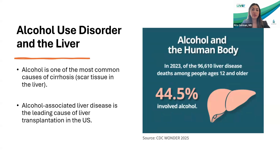So what happens to the liver? Alcohol is one of the most common causes of cirrhosis, which means scar tissue in the liver. Alcohol-associated liver disease is now the leading cause of liver transplantation in the United States. In 2023, of nearly 100,000 liver-related deaths, alcohol was the cause of nearly 45% of those deaths. It is one of the most common causes of liver disease.